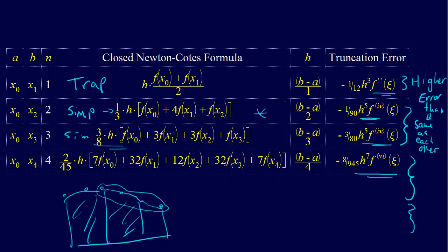So, that's just a little comment then on the truncation error and how it influences which Newton-Cotes formula we might choose and when.